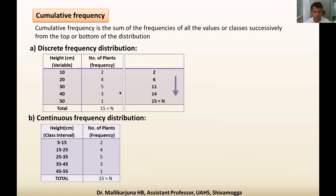Here, adding frequencies from the top: first write 2, then 2 plus 4 is 6, then 6 plus 5 is 11, 11 plus 3 is 14, 14 plus 1 is 15. Finally we get the total frequency value of 15. This is known as less-than cumulative frequency.